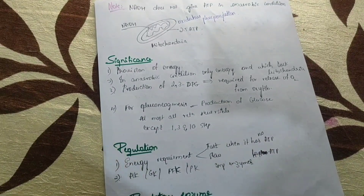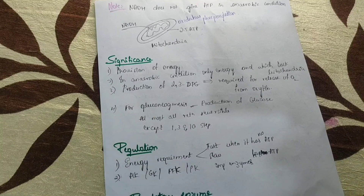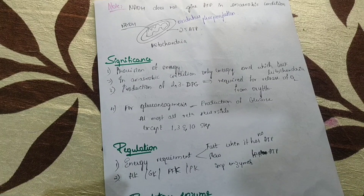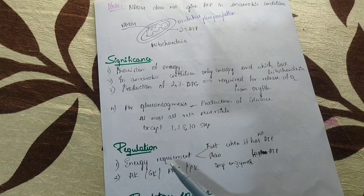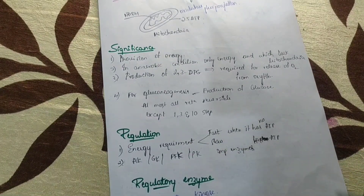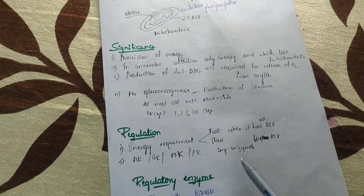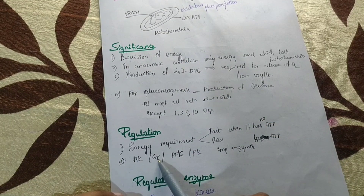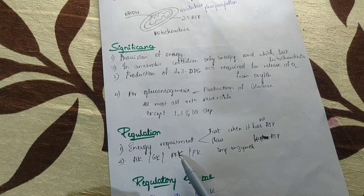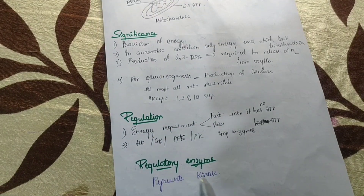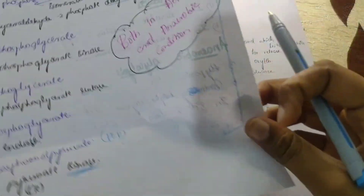Regulation of glycolysis: there are enzymes that regulate glycolysis based on energy demand. When energy demand is more, the rate of glycolysis will be more; when energy demand is less, the rate will be less. The enzymes that regulate glycolysis are hexokinase (HK), glucokinase (GK), phosphofructokinase (PFK), and pyruvate kinase (PK). The specific regulatory enzyme is pyruvate kinase, which acts in the last step.